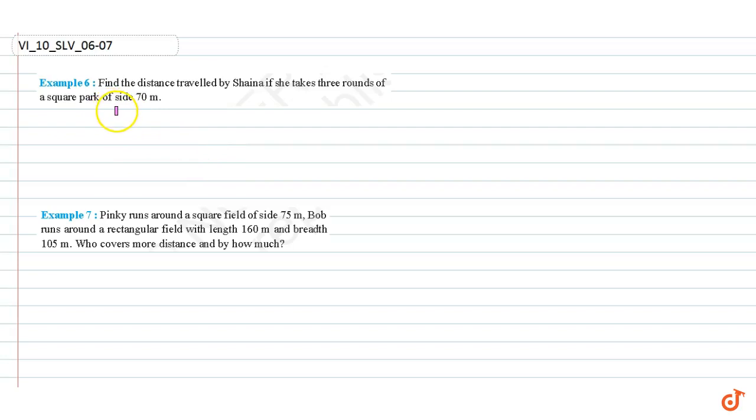In this video we are going to solve examples 6 and 7. Example 6: Find the distance traveled by China if she takes three rounds of a square park of side 70 meters. We know that